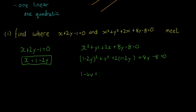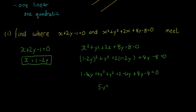Expanding and simplifying: (1 − 2y)² = 1 − 4y + 4y², so we get 1 − 4y + 4y² + y² + 2 − 4y + 8y − 8 = 0. Collecting the y² terms gives 5y². The y terms are −4y − 4y + 8y, which all cancel to zero. The constants are 1 + 2 − 8 = −5.